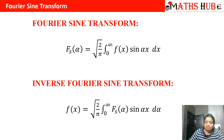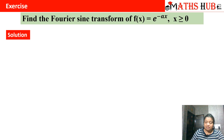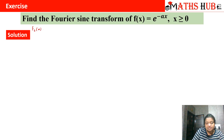Let us do the first question. Find the Fourier sine transform of f(x) = e^(−ax), where x > 0. The Fourier sine transform is given by Fs(α) = √(2/π) ∫₀^∞ e^(−ax) sin(αx) dx. We will move from easy to difficult questions.